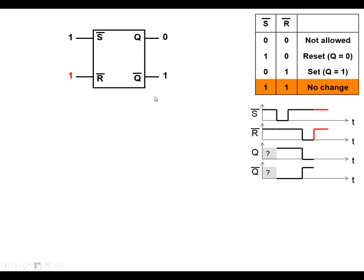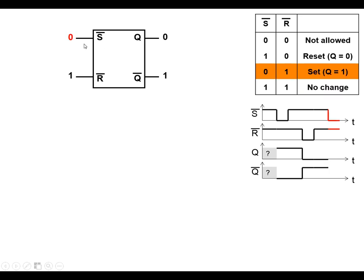We get back to the no-change state — both inputs are high, the output stays as it was. And then if we make the set input go low again, Q goes high and Q-bar goes low as before.